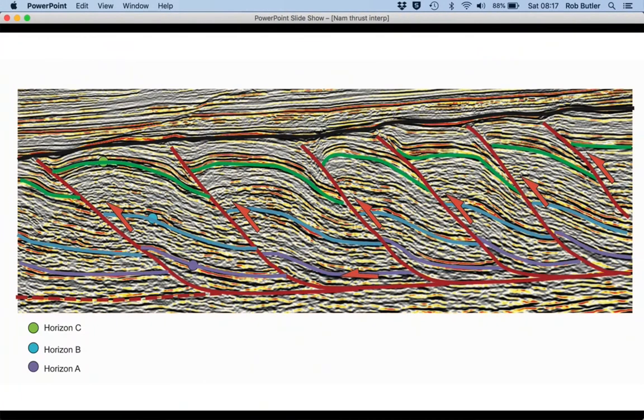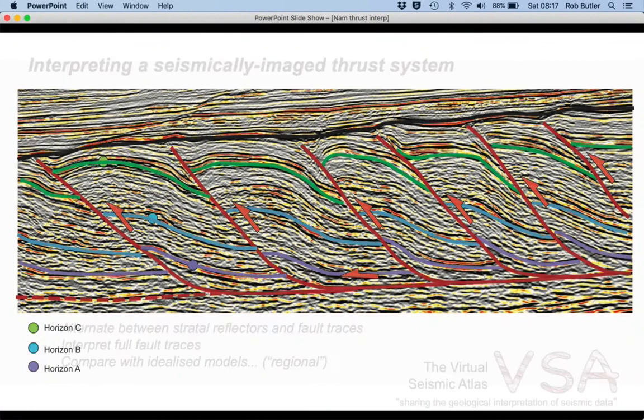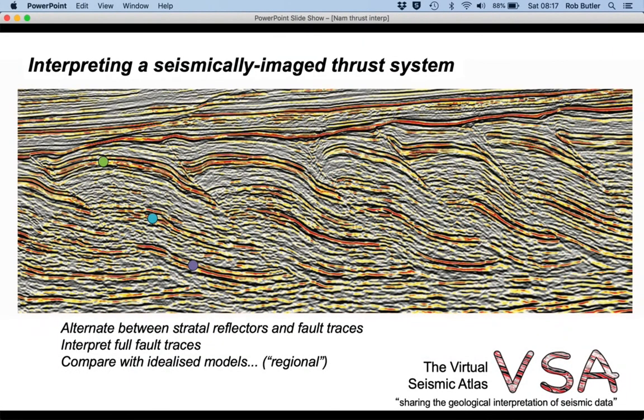So there's our interpretation of our thrust system from offshore Namibia. We alternated between picking stratal reflectors and fault traces.